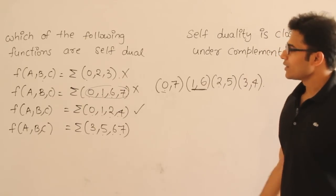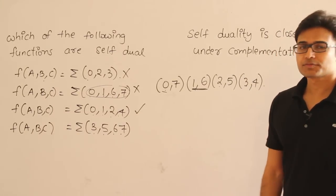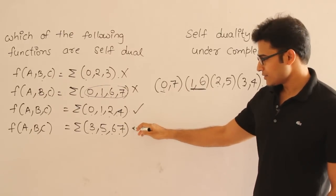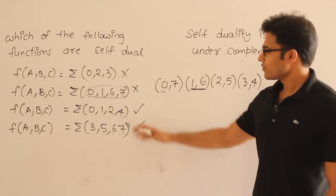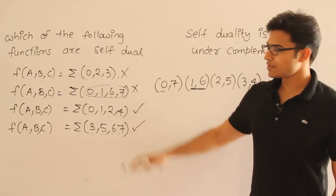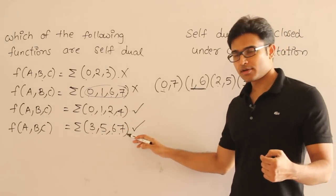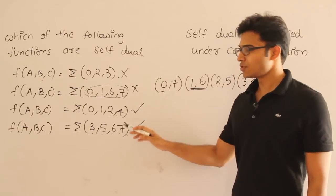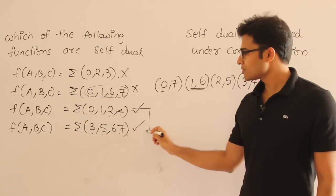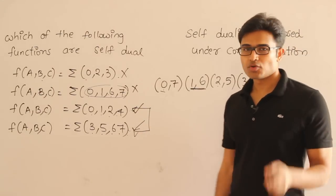What about the fourth option, {3, 5, 6, 7}? If you observe, you can see that it is exactly the complement of the third option. Whatever terms are 0 in the third function are now 1 here, and whatever terms were 1 there are 0 here. Therefore these two functions are complements of each other. This leads to an interesting point.